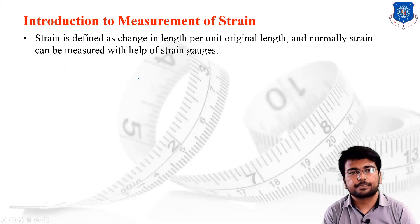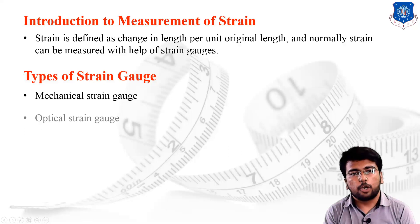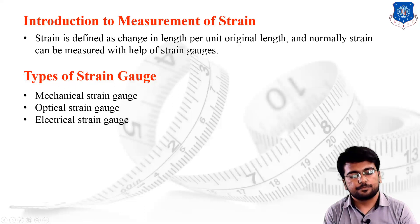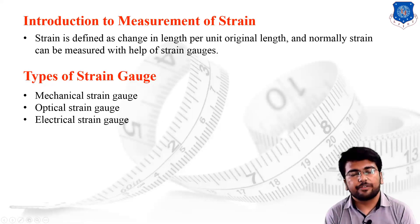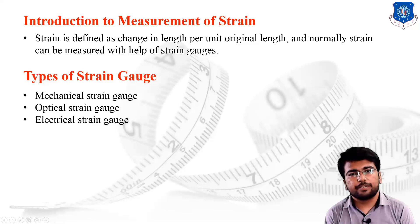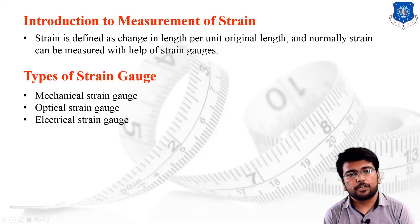The basic types of strain gauges are: mechanical strain gauge, optical strain gauge, and electrical strain gauge. In a mechanical strain gauge, we use instruments that depend entirely on mechanical elements and mechanical setups. In an optical strain gauge, we use different lenses and optical theory for measuring strain, whereas in an electrical strain gauge, we use sensors with circuitry for strain measurement.